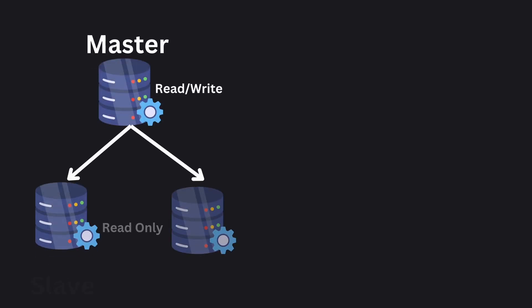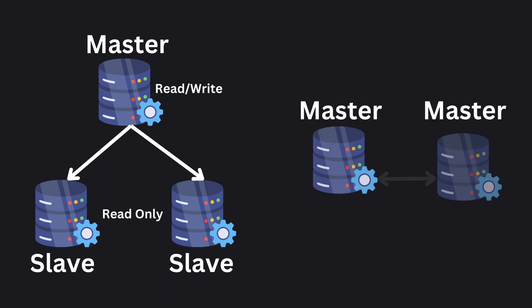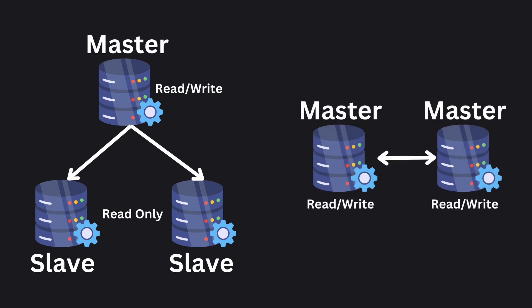The next horizontal scaling option is data replication — keeping copies of data on multiple servers for high availability. You have master-slave replication, where you have one master database and several read-only slave databases. Or you can have master-master replication, which uses multiple databases that can both read and write.